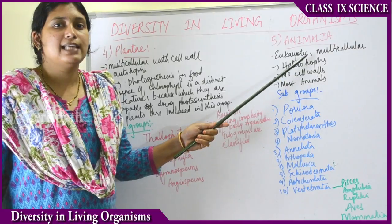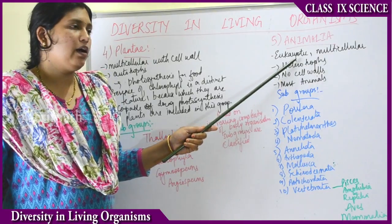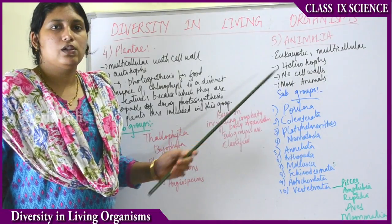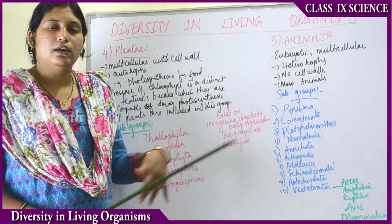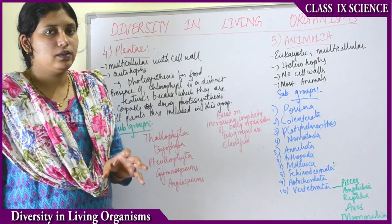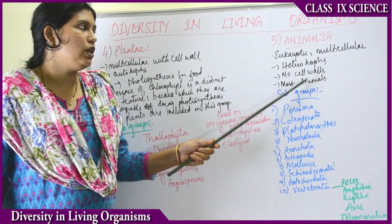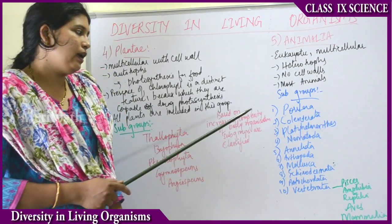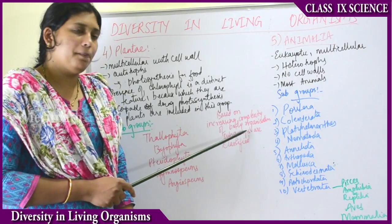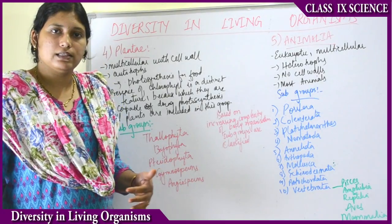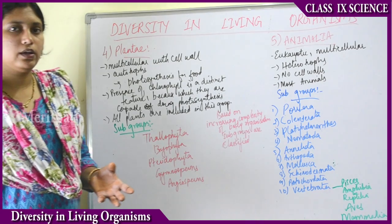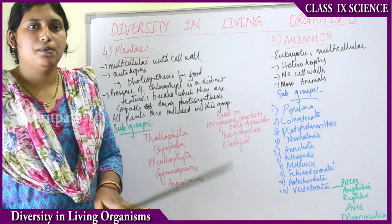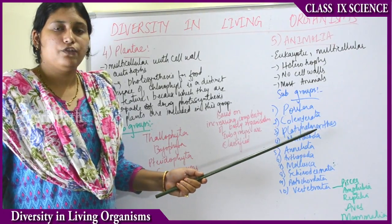The last kingdom is Animalia. Animalia are eukaryotic and multicellular, but they do not have any cell wall and they are heterotrophs — they depend on others for their food. They cannot prepare their own food. Mostly all animals come under kingdom Animalia. Based on increasing complexity of body organization, Animalia are further classified into 10 subgroups.